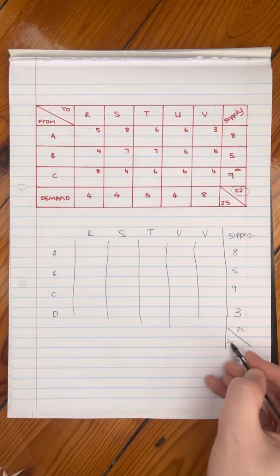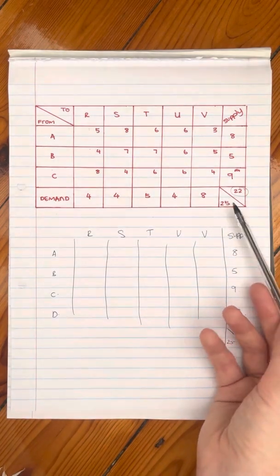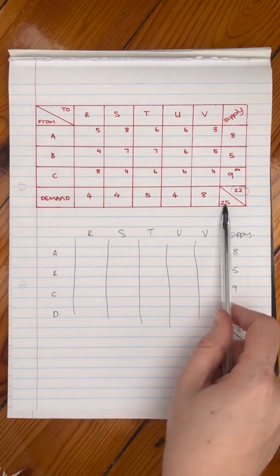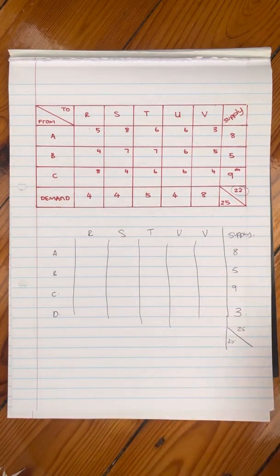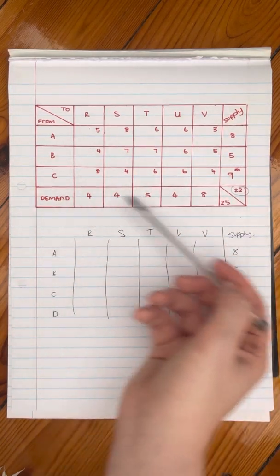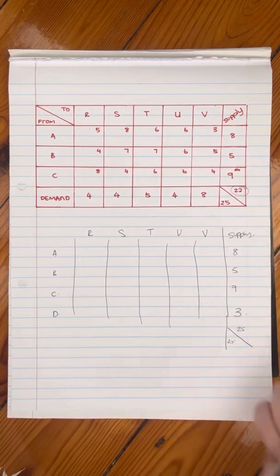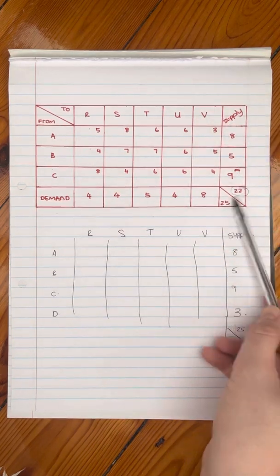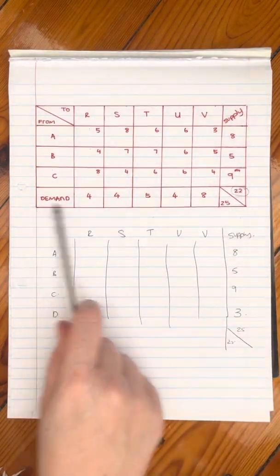And you could do a very similar thing if this was 22 instead, you would have added a column because remember these values here need to add up to the 25. So just to remind you about that, you figure out which one is lowest because you can add to it to increase it. And if it is sitting in the supply, you're going to add a row. If it's sitting in the demand, then you're going to add a column.